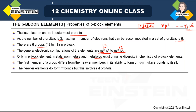In p-block elements you can find metals, non-metals, and metalloids. This makes p-block very versatile. In s-block there are only metals; in d-block also mostly metallic. But in p-block all three types exist, which is why the chemistry of p-block elements is very diverse in nature.